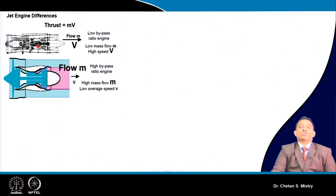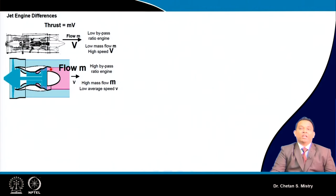Next came the concept of high bypass ratio or low bypass ratio engines. For commercial aircraft, high bypass ratio engines generate approximately 70 percent of thrust from the fan and 30 percent from the core engine. We have previously discussed the advantages of high and low bypass ratio engines, so let us focus on what we are looking for in the future.